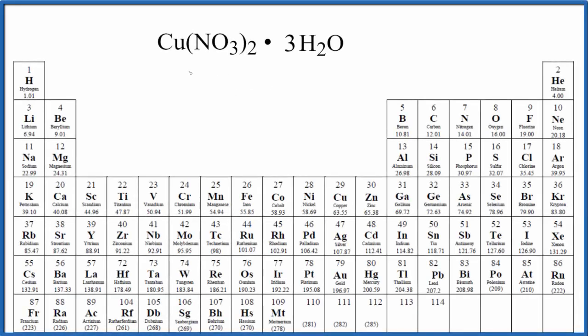In this video, we'll find the molar mass for Cu(NO3)2·3H2O. This is copper 2 nitrate and this dot here means that we have three water molecules around this copper 2 nitrate. This is called a trihydrate.